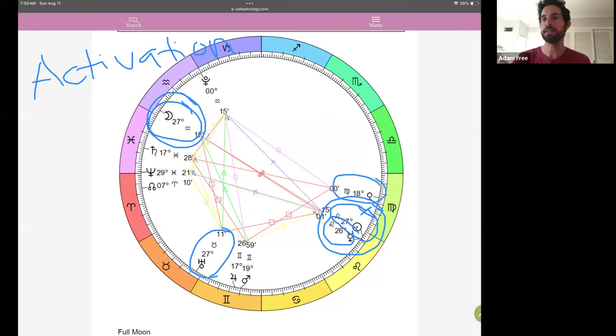So Saturn really represents loneliness and isolation when it's in aspect with Venus. A lot of times there's a need to kind of pull back. This could also be a time of delays, financial delays.